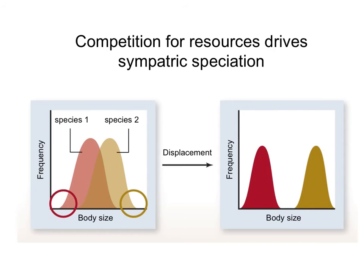These examples show that the main driver of sympatric speciation is competition for resources, as organisms become more and more specialized on a specific resource — as seen in cichlid fish specializing on particular food sources and flies specializing on particular trees. This results in selection that enhances differences between the populations. The type of selection that moves populations apart is called disruptive selection — it takes one homogeneous population and turns it into two separate populations.